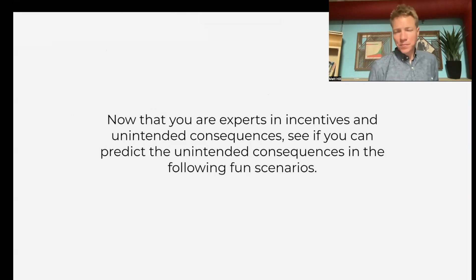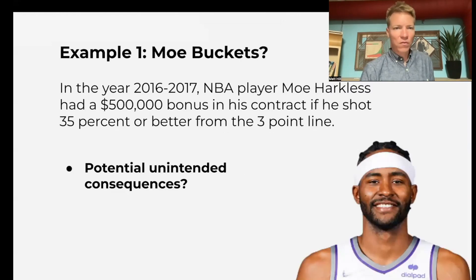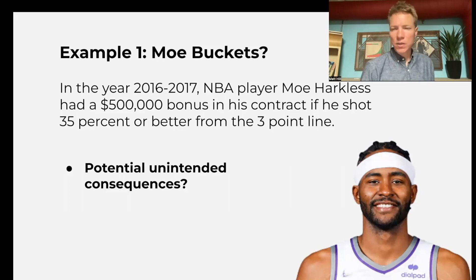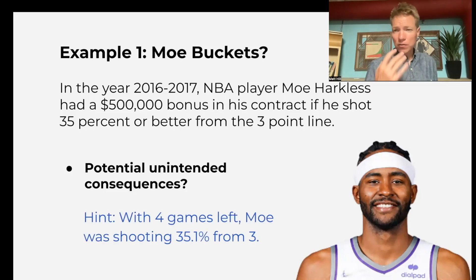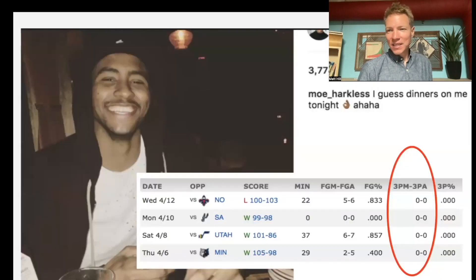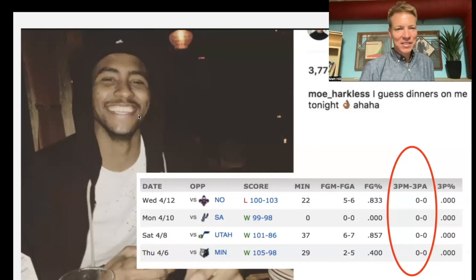If you have time, you can go through some fun examples of unintended consequences provided for you. A personal favorite: an NBA player had a $500,000 bonus if he shot above 35%. You can ask your students what some potential unintended consequences might be. With four games left in the season and Mo right above 35% at 35.1, students can guess what he did in those last four games — he didn't shoot any three-pointers to maintain that 35.1. This is his Instagram post at the end of the season after he got his $500,000 bonus.